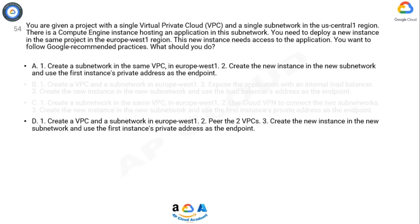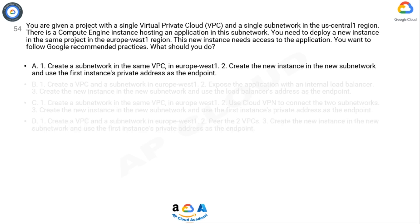VPN is best when performing data transfer between cloud and on-premises, with a 3 Gbps max. Nothing is happening with on-premises here, so it is not needed. D is incorrect because in GCP, VPCs are global and subnets across different regions can be accessed using private IPs — no VPN setup required. The correct answer is Option A.